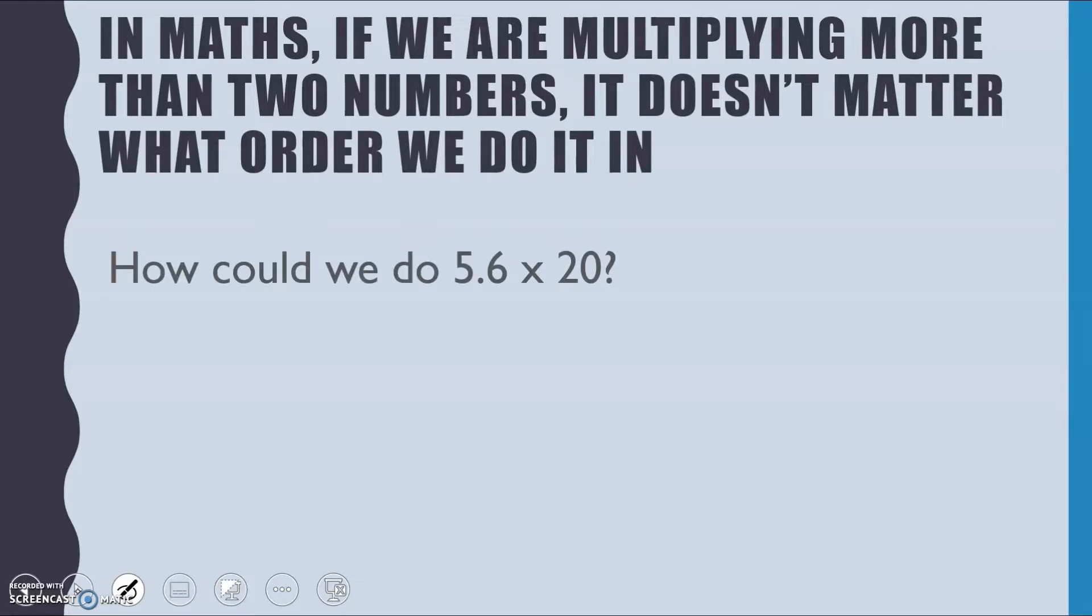So how could we do 5.6 times by 20? Well remember, 20 is just made up of two lots of 10. So the way that I would tackle a sum like this is I would take my 5.6 and times it by whatever number it is at the start of my multiple of 10, 100, or 1000. So in this case, it's 2.